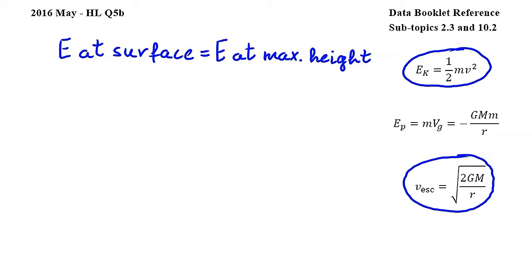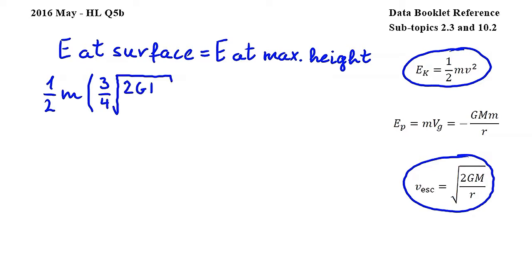G is the gravitational constant, capital M is the mass of the planet, and R is the radius of the planet. We are given in the question that V is equal to three-quarters of the escape speed, so we will substitute (3/4) times the square root of 2GM over R in place of V in the equation for kinetic energy. This gives us one-half m times (3/4 times square root of 2GM over R) squared. So this is the expression for the kinetic energy of the probe at the surface.